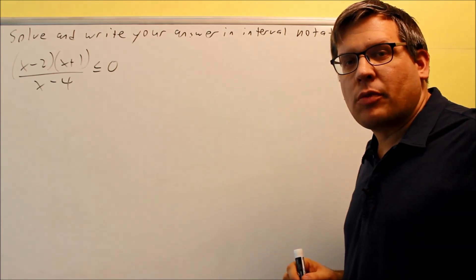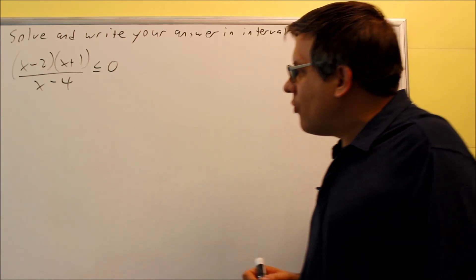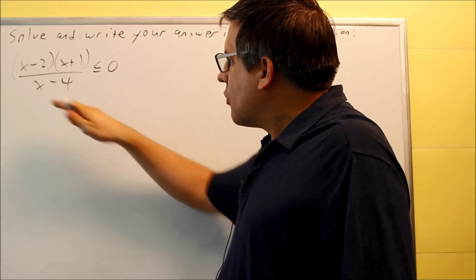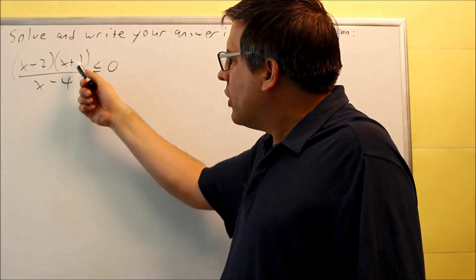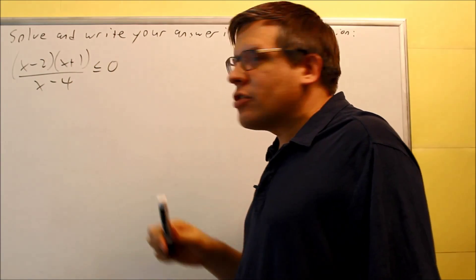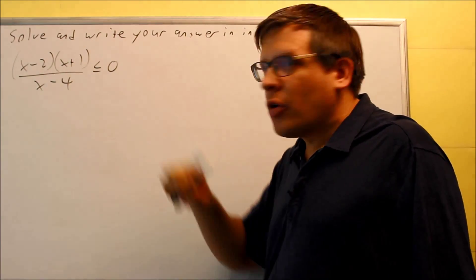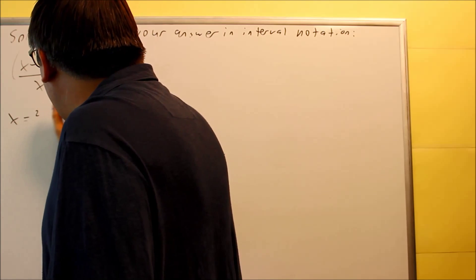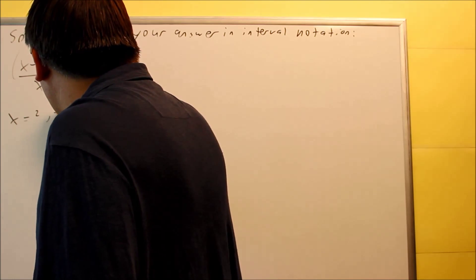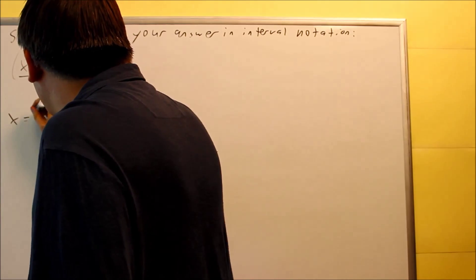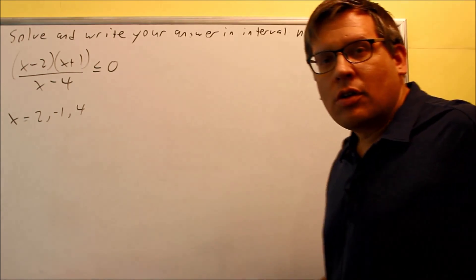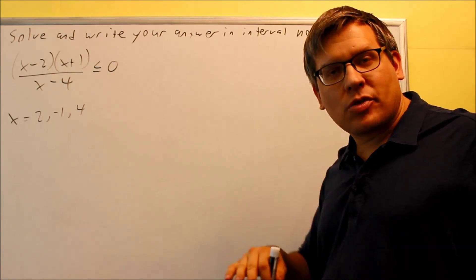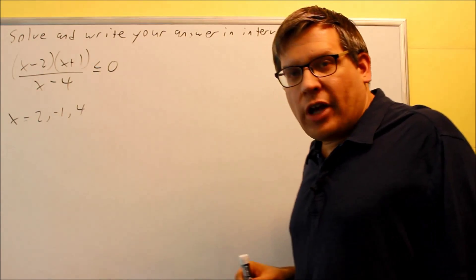Let's start with the table method. The table method means we have to figure out the numbers we're going to put on our columns. First, we need to figure out what makes each of these parts equal to zero. We're going to look at both the top and bottom of the fraction. So we have x = 2, x = -1, and x = 4 — these are the numbers that make either the top or bottom zero.